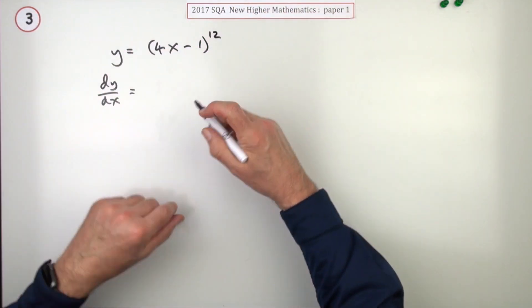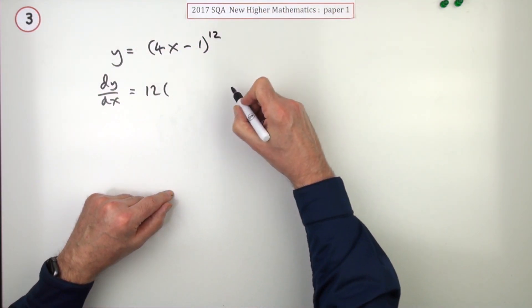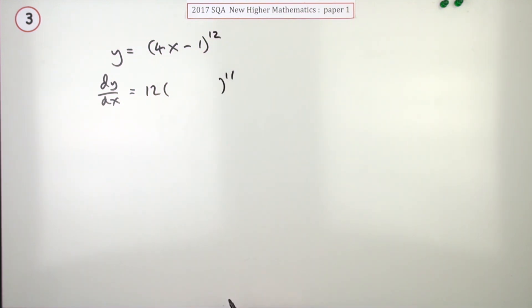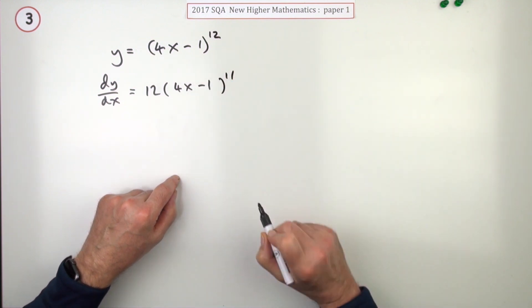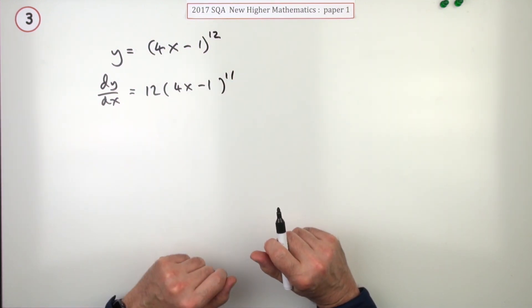You start with that power 12. Differentiating that, it'd be multiplied by the power, take one off the power. Then you look inside. What was inside it? It was 4x minus 1. But at that point there, you're doing the outer function.